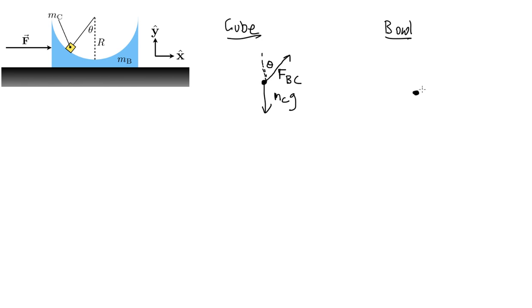Now for the bowl, we've got the mass of the bowl times gravity is the weight. And then we've got the force that it's getting pushed on right there. Here's my F going off in the x direction. And we also have the force of the cube on the bowl. And so we know the force on the cube in the bowl. And this angle here is theta.